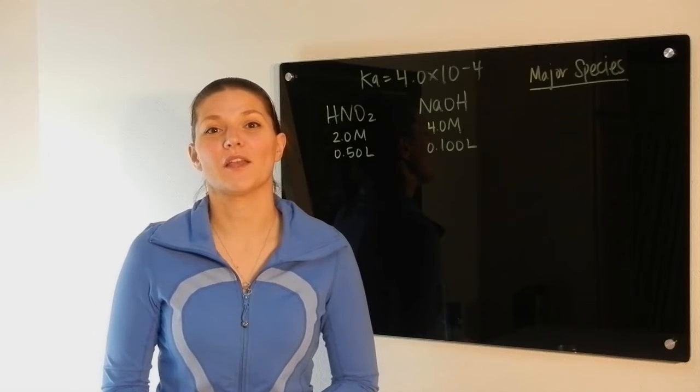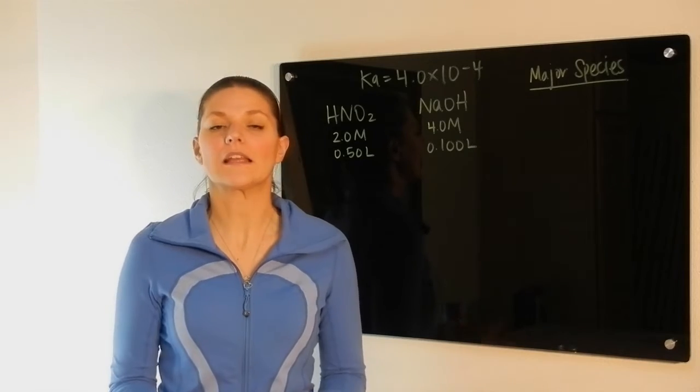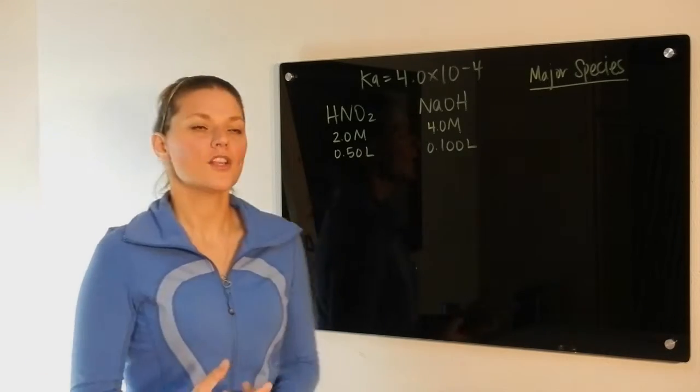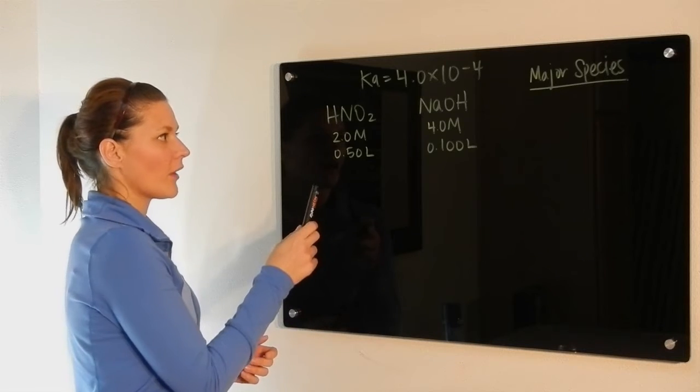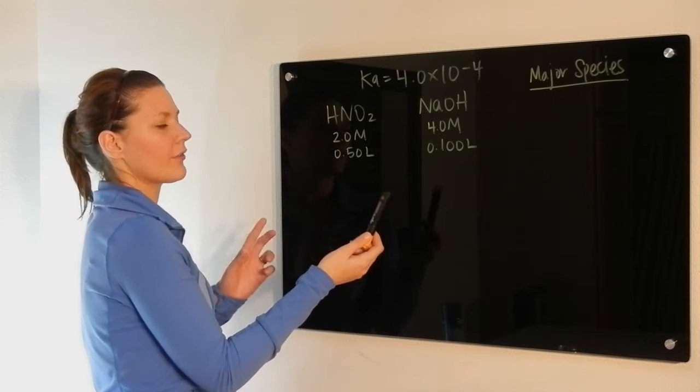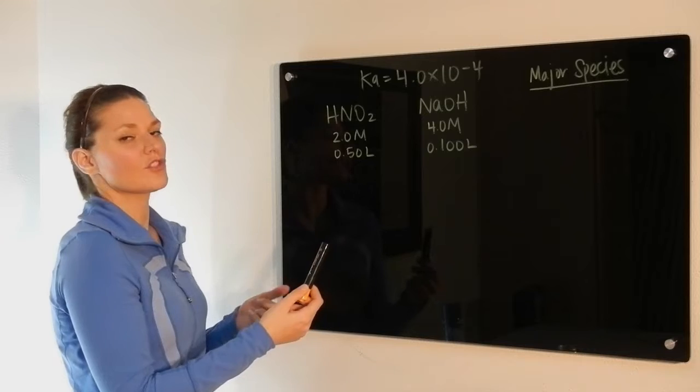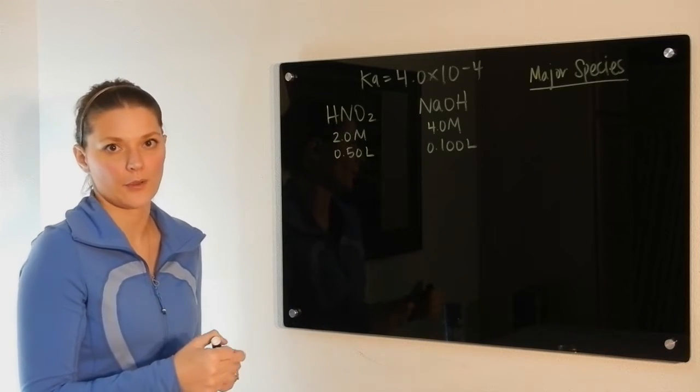Hi everyone, this is a video tutorial for how to handle a titration problem. If we look at the example in front of us, you'll see that we have a weak acid and a strong base together. This is not a buffer solution, so we cannot at this point use the Henderson-Hasselbalch equation.